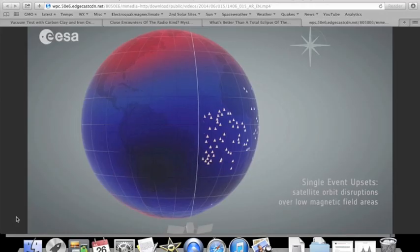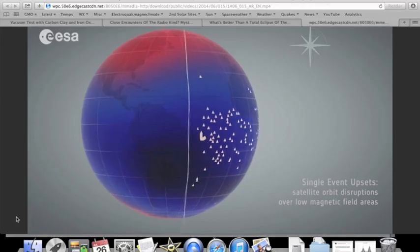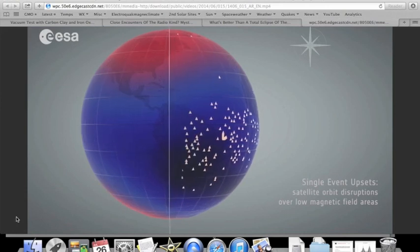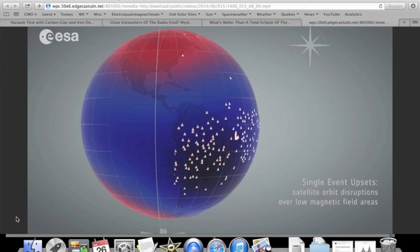It also shows some of the significant events in the field this year that affected the spacecraft, with an expected swarm near the South Atlantic anomaly, but also an equally large anomaly off the west coast of South America.